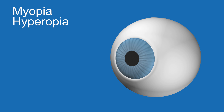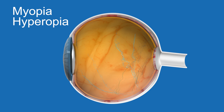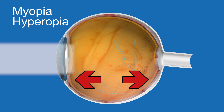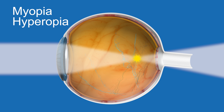Myopia, or nearsightedness, occurs under two conditions. The first is when the eyeball develops to be slightly longer than usual from the front to the back. The second is when the curve on the front surface of the eye, or the cornea, is too steep. This causes the light entering the eye to come to a focus in front of the retina, which results in blurred distance vision.